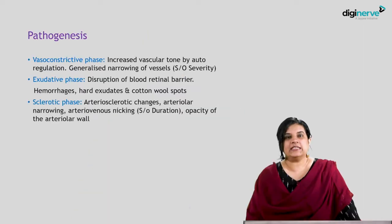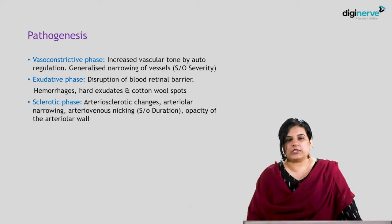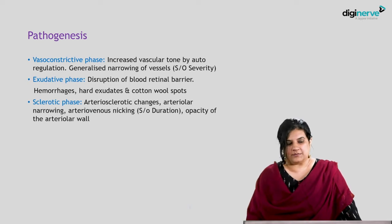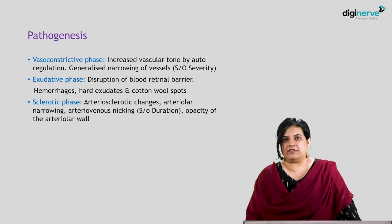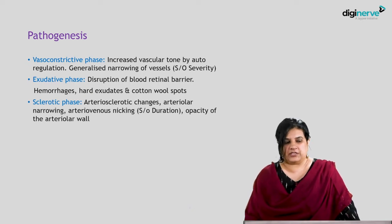The pathogenesis of hypertensive retinopathy has three phases: the vasoconstrictive phase, the exudative phase, and the sclerotic phase. In the vasoconstrictive phase, there is increased vascular tone because of autoregulatory mechanisms, resulting in generalized narrowing of the blood vessels. This phase is quite suggestive of the severity of the hypertension.